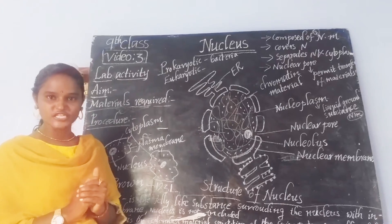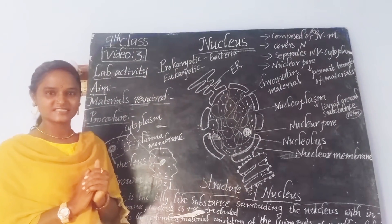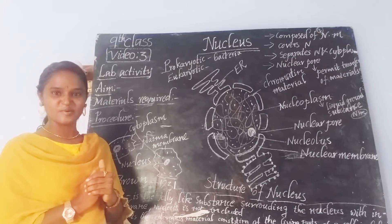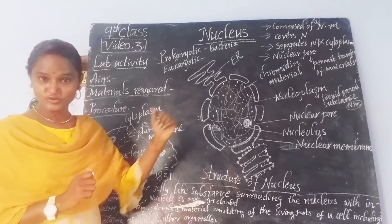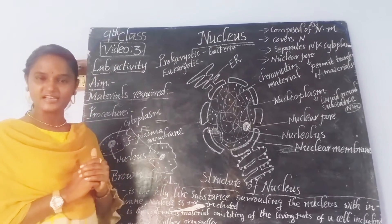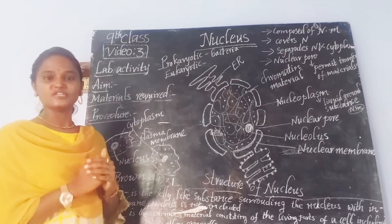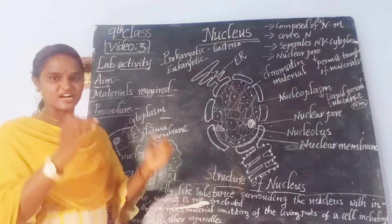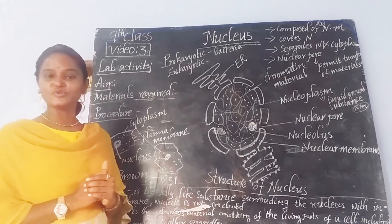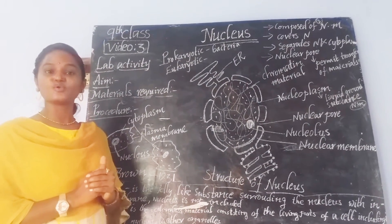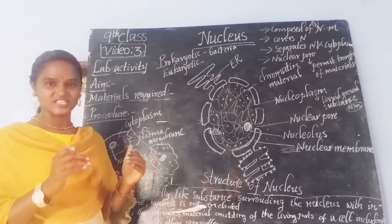If we talk about today's topic, that is the nucleus. Whenever you hear the word nucleus, you may remember that it is the head of the cell. Why do we call the nucleus the head of the cell? Because the nucleus is capable of controlling all the functions of the cell. That's why we call the nucleus the control room of the cell, and also the head of the cell.